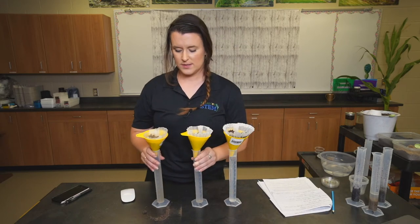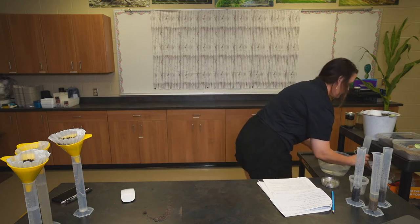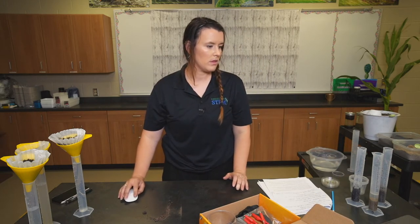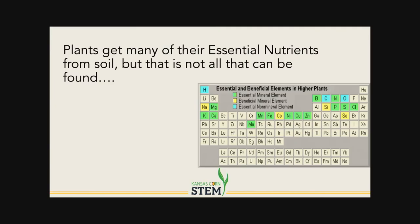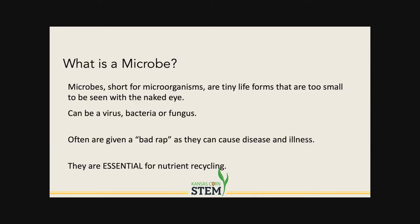Last, we move on to MudWatts. A great place to start: we know from earlier that plants get essential nutrients from soil, but those aren't the only things found in soil — this is a great extender lesson. Microbes are present and must be present for healthy soil. Microbes are short for microorganisms — tiny life forms too small to see with the naked eye. They can be virus, bacteria, or fungus. They often get a bad rap for causing disease, but they are essential for nutrient recycling.